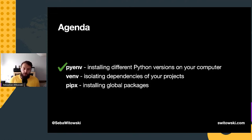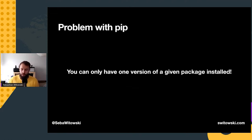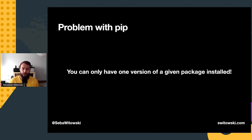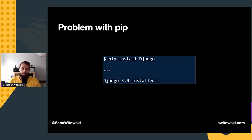That's how you can easily manage Python versions on your computer. Now let's talk about dependencies in your projects. Pip is the package manager for Python — whenever you want to install a new package, you run `pip install` and the package name. However, pip has one big problem: whenever you ask it to install a specific version of a Python package, it will uninstall the previous version and install the one you asked for. Let me show you an example — imagine you are a Django web developer and you install the latest Django 3 with `pip install django`.